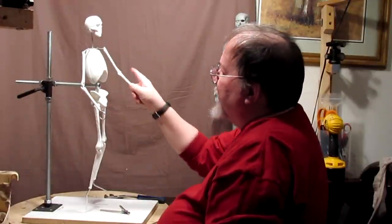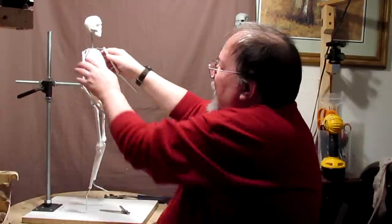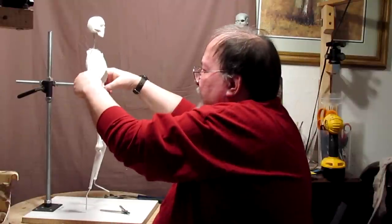The smaller armature, the 18-incher, doesn't have the bones in the arm. And that's the only difference. It's just smaller and doesn't have the bones.